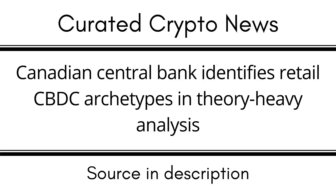The archetypes are ranked by eight criteria, with centralized topping the rankings and direct coming in last. Privacy was the most problematic criterion, one for which only the direct archetype received a high score. Darba stated that the archetypes enable central banks to express their policy goals and focus their efforts on classes of systems that fit those archetypes.